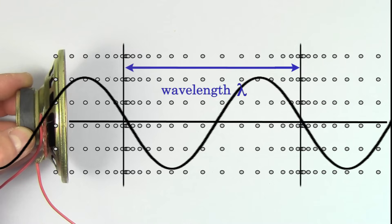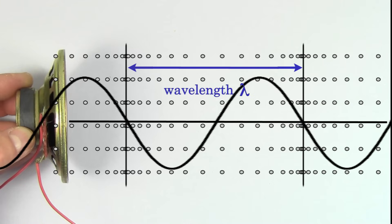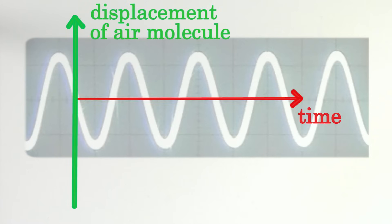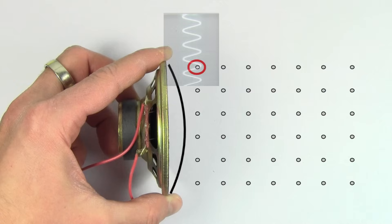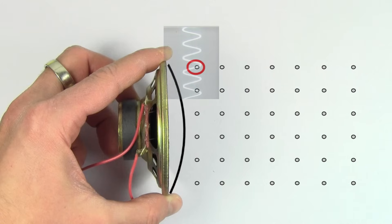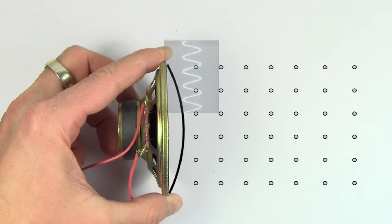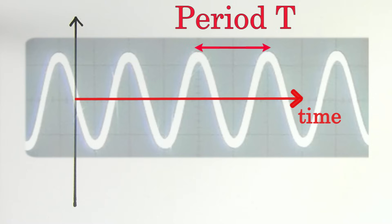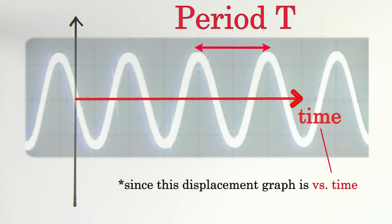Because it would be measuring the distance between compressed regions in space. So be careful: for a sound wave, a displacement versus time graph represents what that particular air molecule is doing as a function of time. And on this type of graph, the interval between peaks represents the period of the wave.